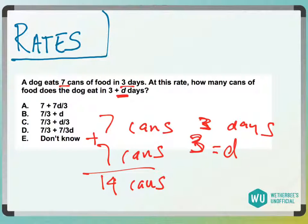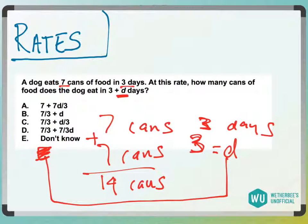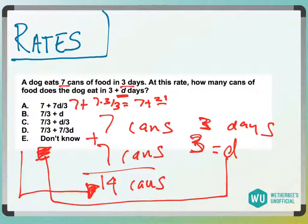Now, we made D equal to three. So, that means when we plug our D into these answer choices, whichever one tells us it also equals 14 is going to be our correct answer. Answer choice A would be seven plus seven times three divided by three, which is seven plus 21 over three, which is seven plus seven, which equals 14, and we have a winner. Answer choice A.